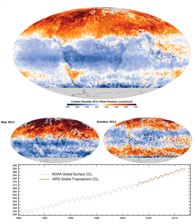Following the start of the Industrial Revolution, atmospheric CO2 concentration increased to over 400 ppm and continues to increase, causing the phenomenon of global warming. As of April 2018, the average monthly level of CO2 in Earth's atmosphere exceeded 410 ppm.